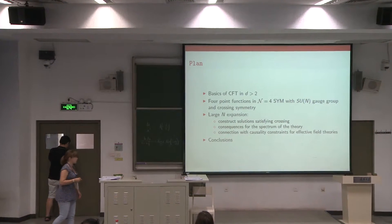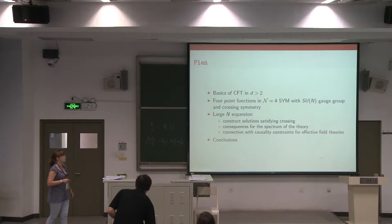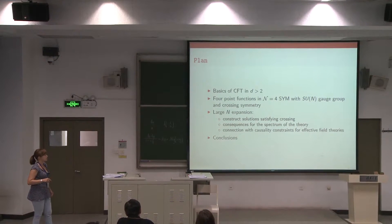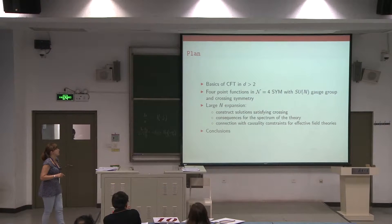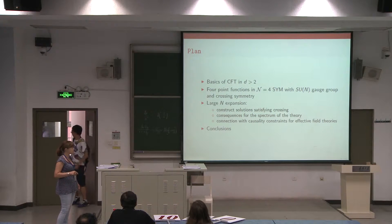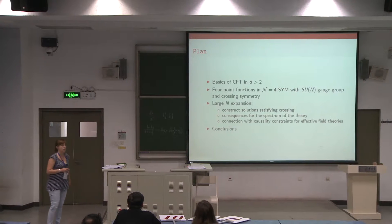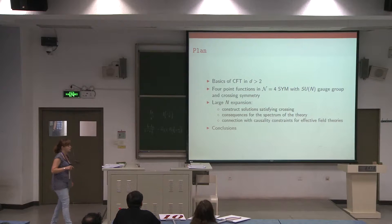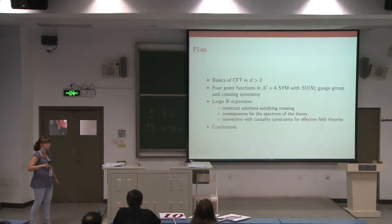The plan of the talk is as follows. I will start by introducing some notation and some basic facts of conformal field theory in dimension bigger than 2. This will lead to the definition of the problem I would like to address: the study of the four-point function in N=4 super Yang-Mills with SU(N) gauge group and the crossing symmetry related to this four-point function. Then I will study the large N expansion, construct solutions to the crossing equation, and see which consequences one gets for the spectrum. If I have time, I will also talk about the connection with causality constraints for effective field theories.